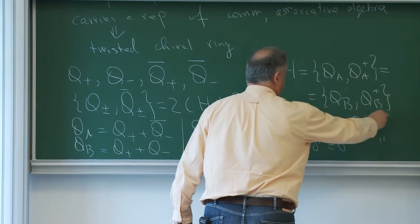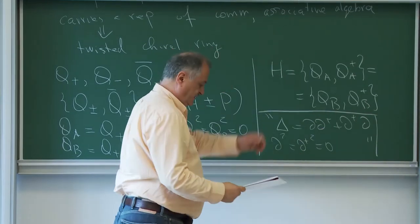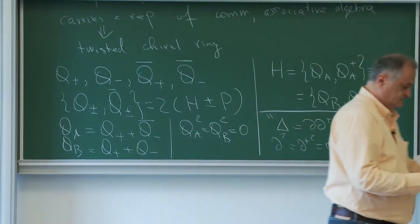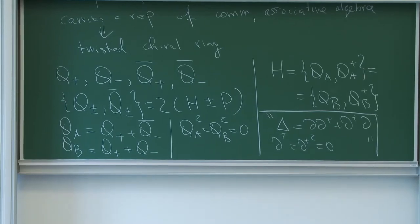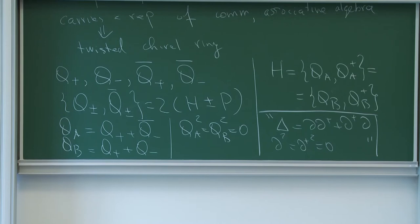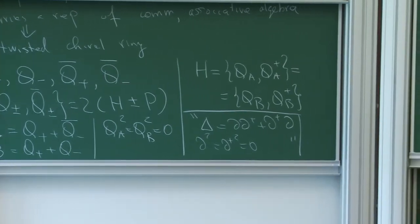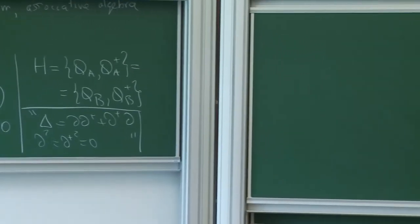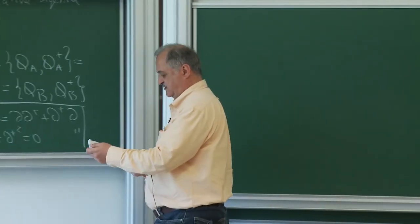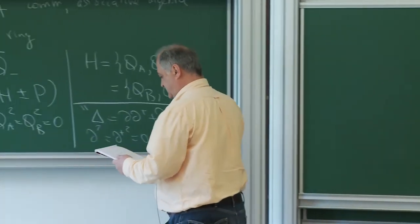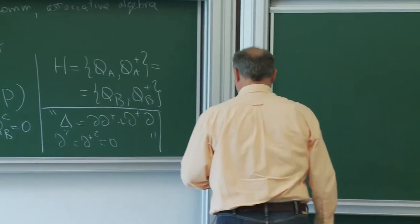So it's just for analogy. The power of this supersymmetry with four supercharges — all these things go back to Witten in the late 80s, and are very well used and described by Cecotti and Vafa in the early 90s. Witten is probably late 80s, and Cecotti and Vafa in early 90s.